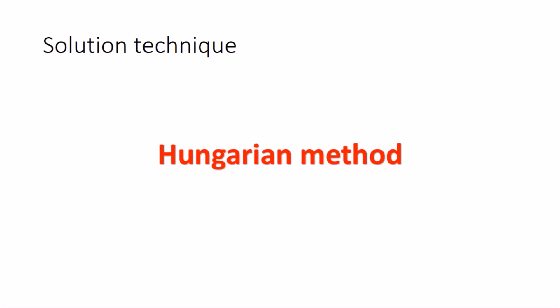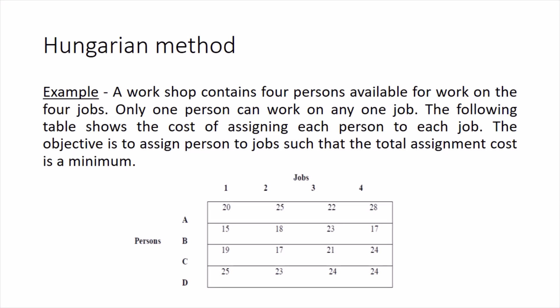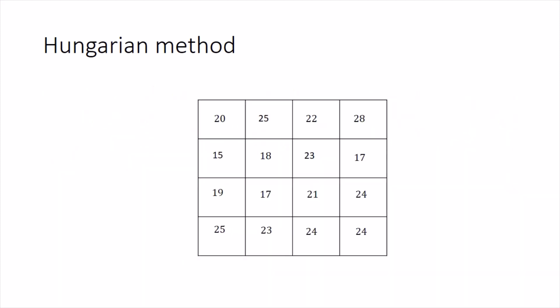Unlike the transportation problem, where the solution techniques were broadly divided into two steps — initial basic feasible solution and then the optimal solution — here we get the optimal solution directly in one go. This is an iterative method but different from the techniques used in the transportation problem. I'll explain the Hungarian method through an example: a workshop with four persons available for four kinds of jobs. We are given the cost of assigning the jobs, and we want to minimize it.